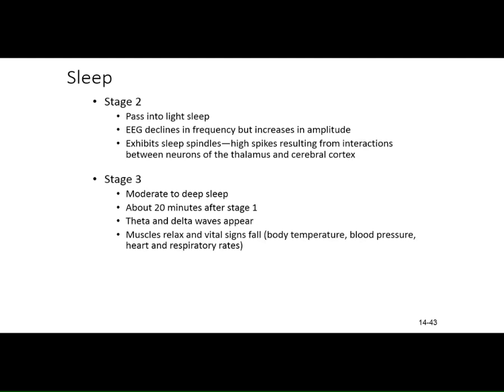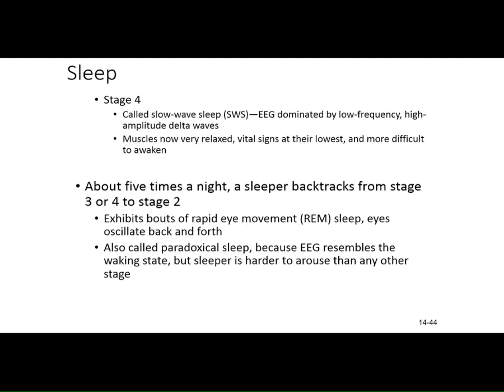The thalamus is part of the diencephalon — the core, the center of the brain. Stage three is a moderate to deep sleep, happening about 20 minutes after stage one. Theta and delta waves appear. At this point, body muscles relax, vital signs fall — respiration rate goes down, blood pressure goes down. Stage four is slow wave sleep: a low frequency, high amplitude delta wave. The muscles are very relaxed, vital signs are at their lowest, and it is most difficult to awaken somebody at this stage.